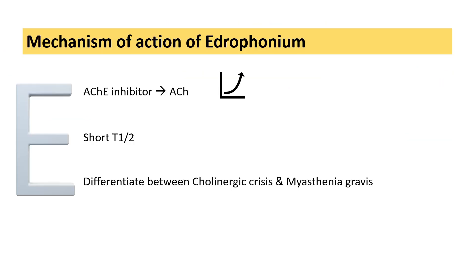The mechanism of edrophonium: it is an anticholinesterase — an acetylcholinesterase inhibitor — that increases acetylcholine levels. It is a shorter-acting anticholinesterase, which is used to differentiate between cholinergic crisis and myasthenia gravis.